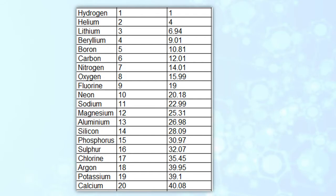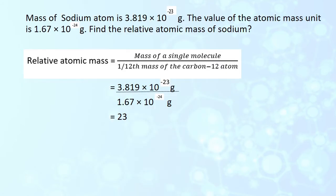In this table you can see the atomic number and relative atomic mass of elements from atomic number 1 to 20. For example, the real mass of a sodium atom is 3.819 × 10⁻²³ grams, and it is very difficult to use this amount in calculations. So we divide this real mass by the atomic mass unit, 1.67 × 10⁻²⁴ grams, and we get the answer 23. So the relative atomic mass of sodium is 23.